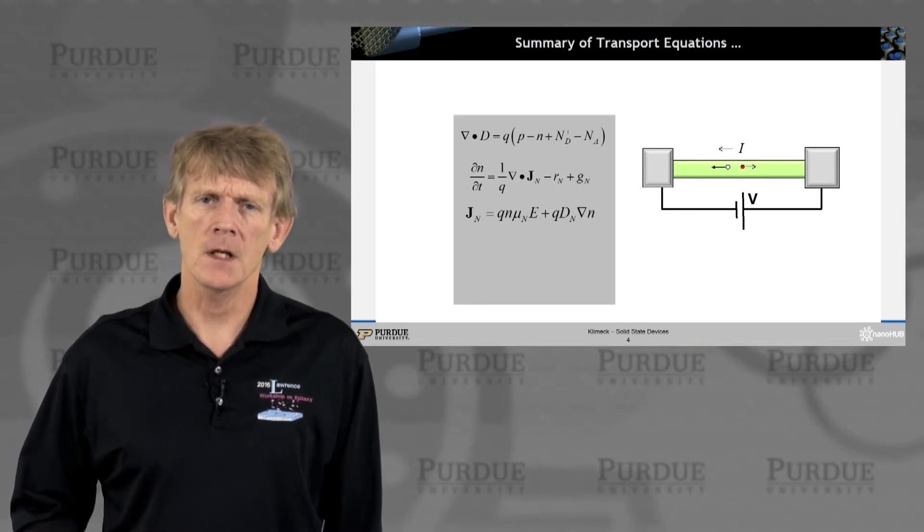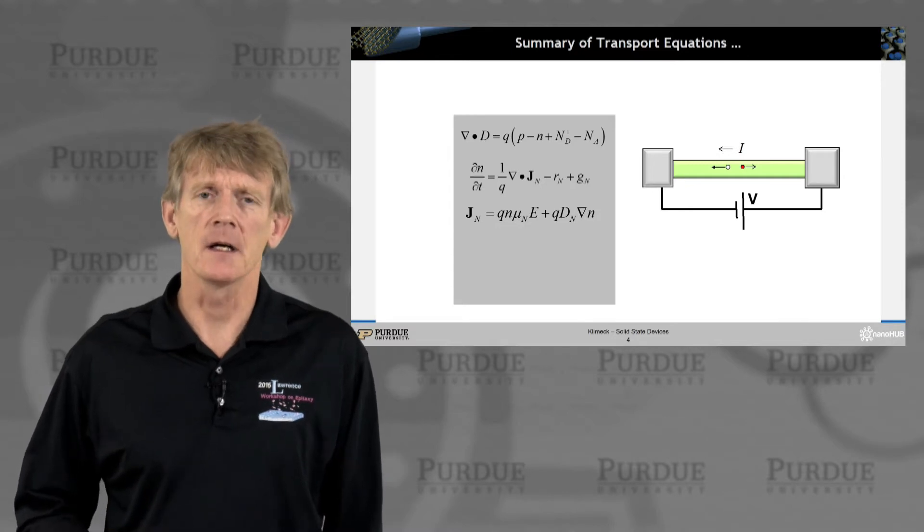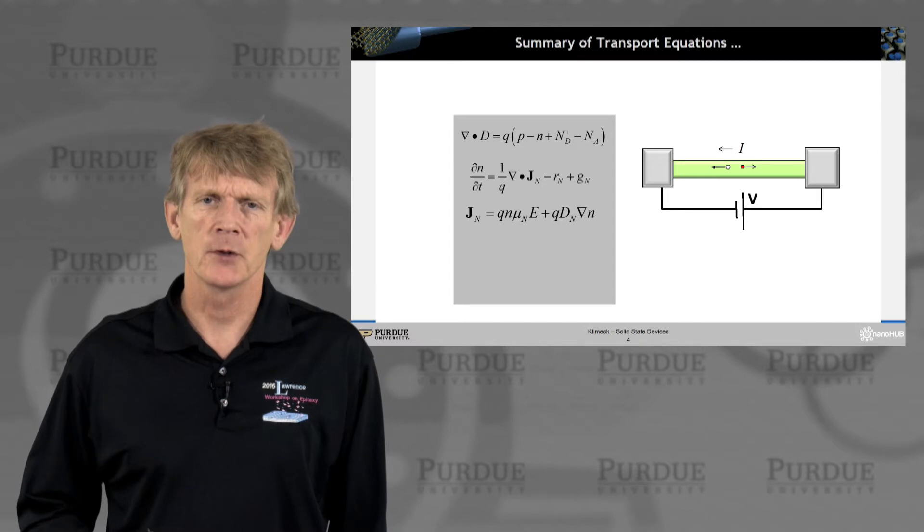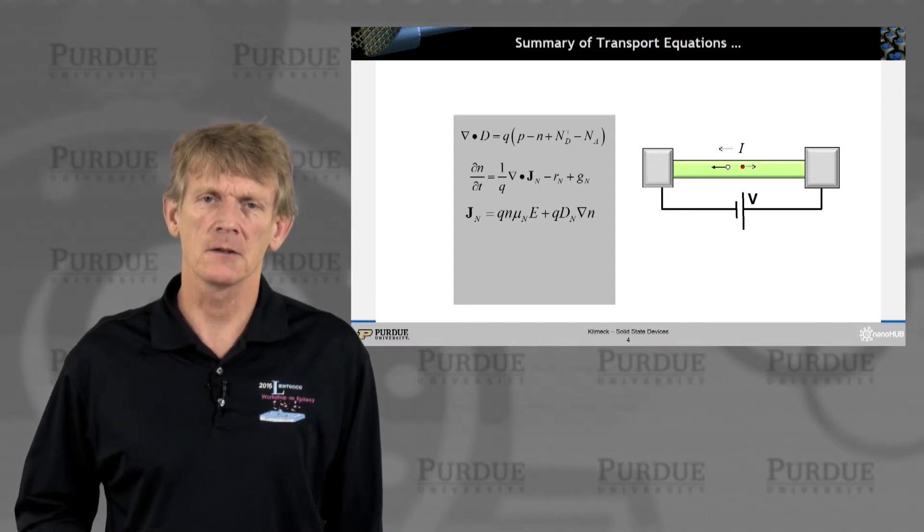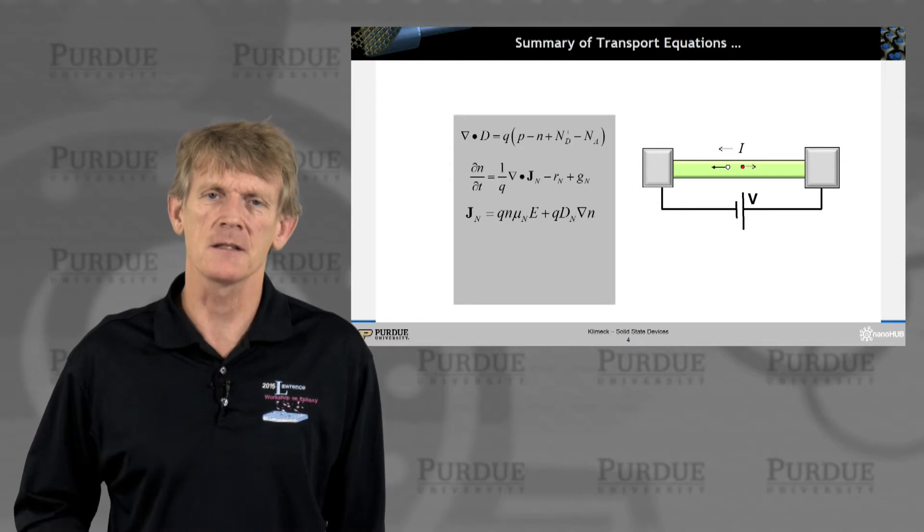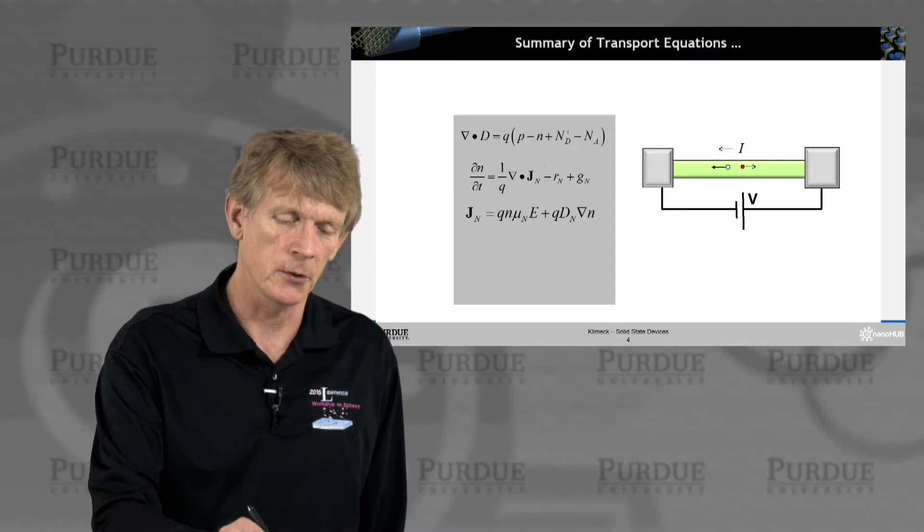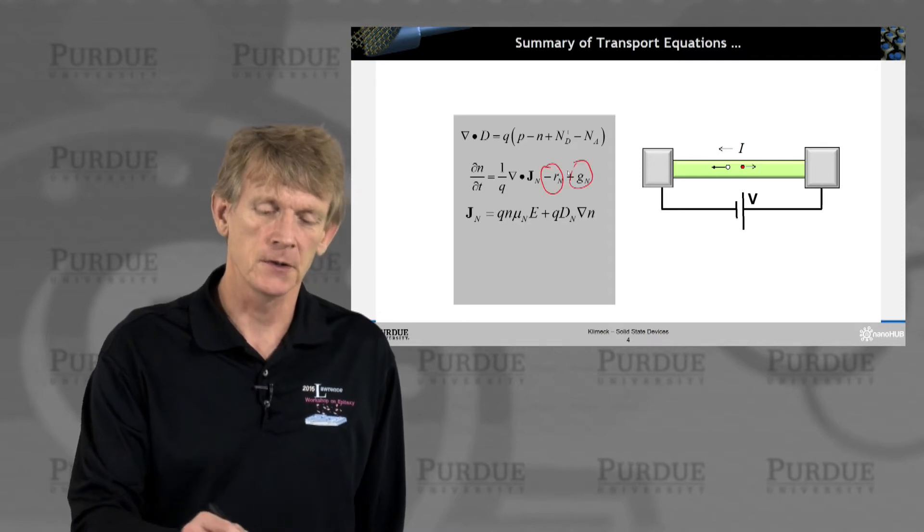Now there's two equations for the electron flow. First we look at dn dt, which is the gradient or the change, spatial change of the electron flow, and minus a recombination where the electron number is reduced, or maybe there's carriers generated. So there's two components here, two components here.